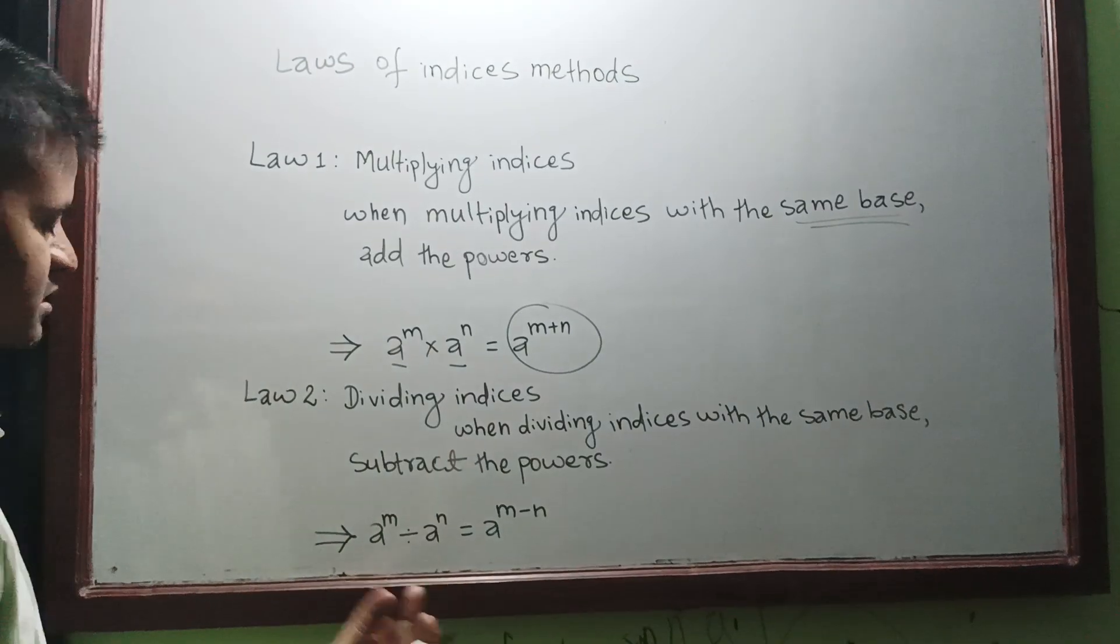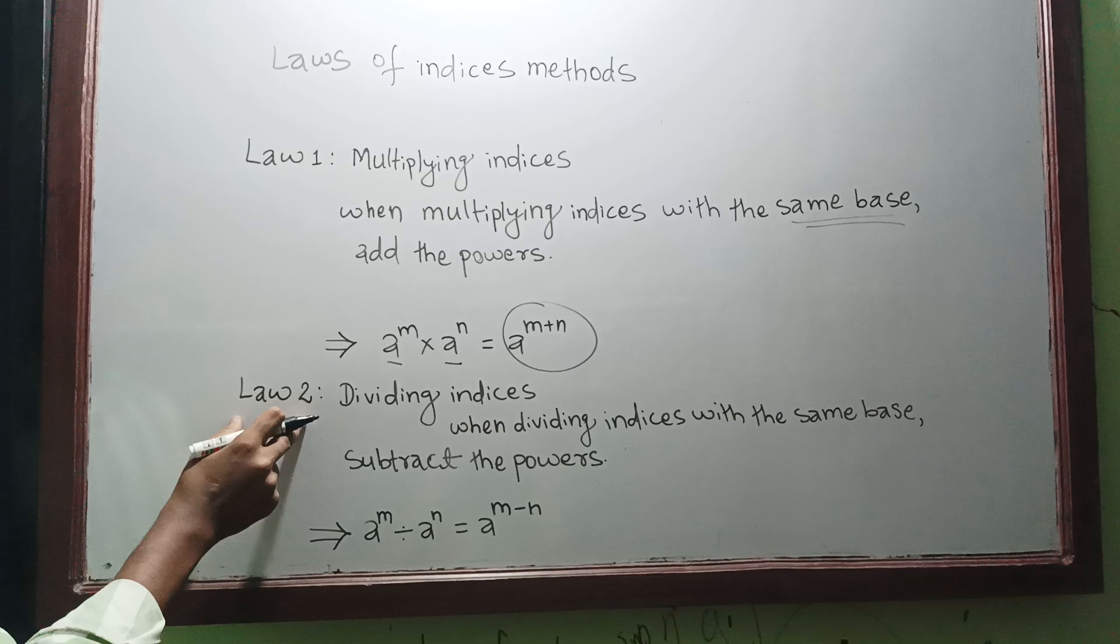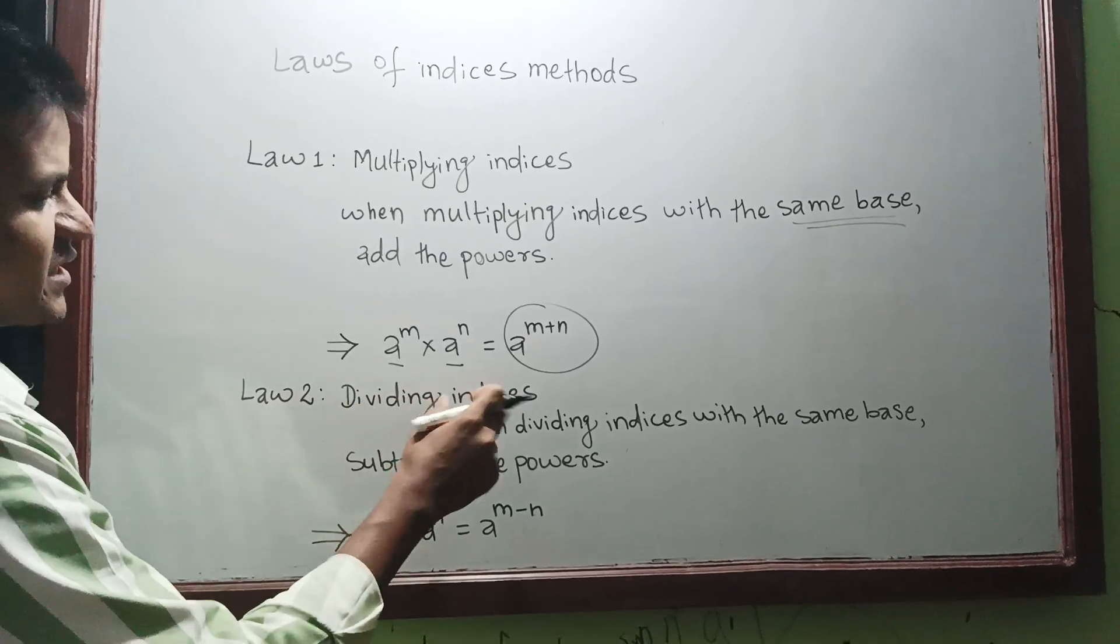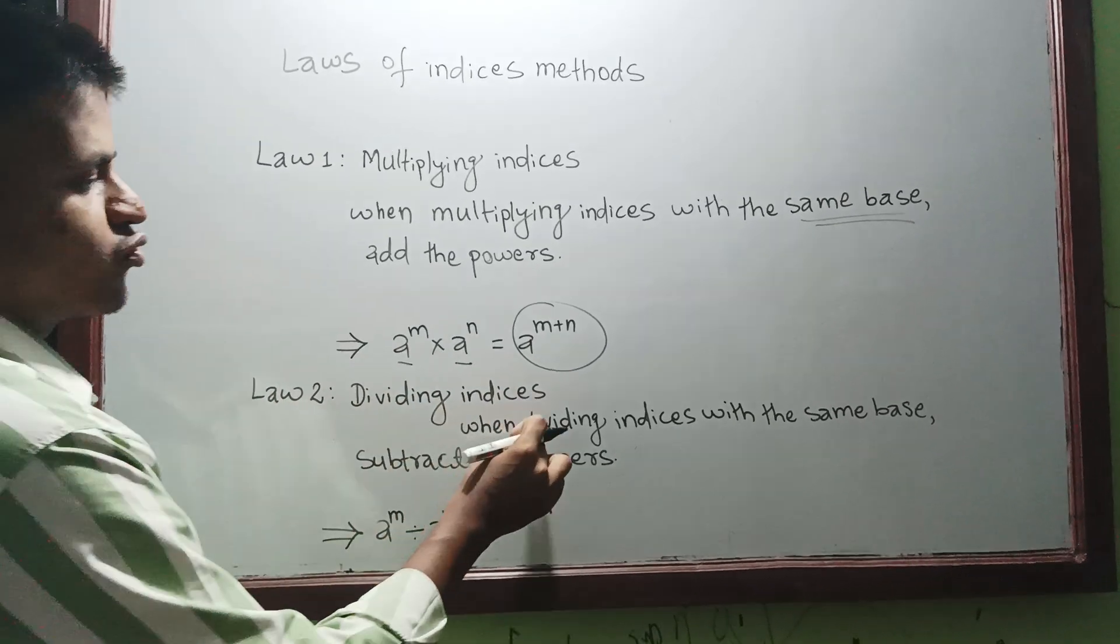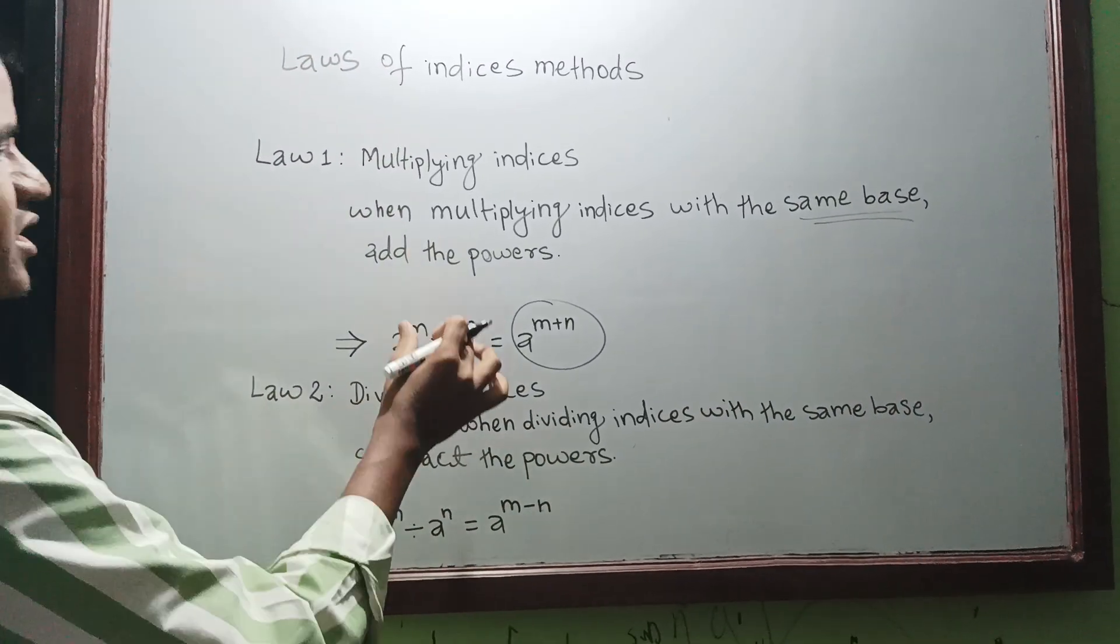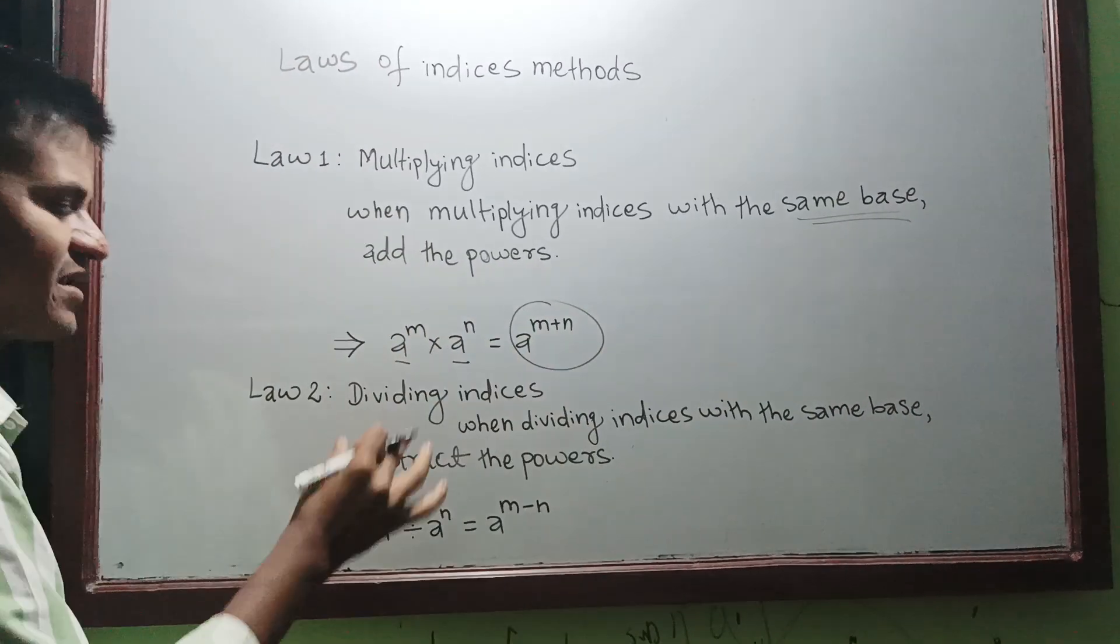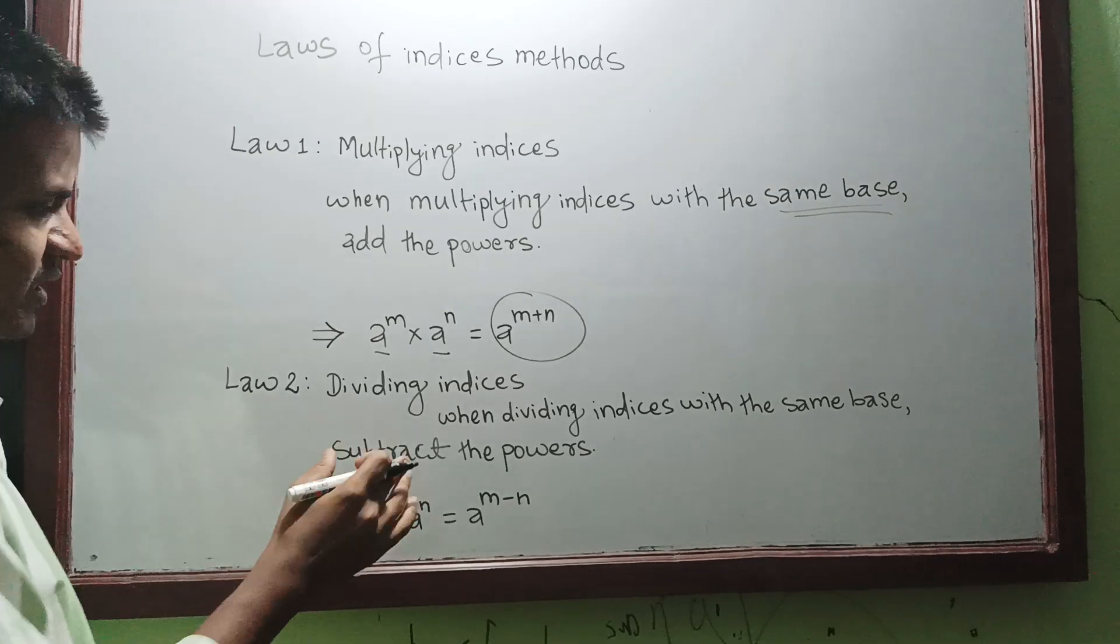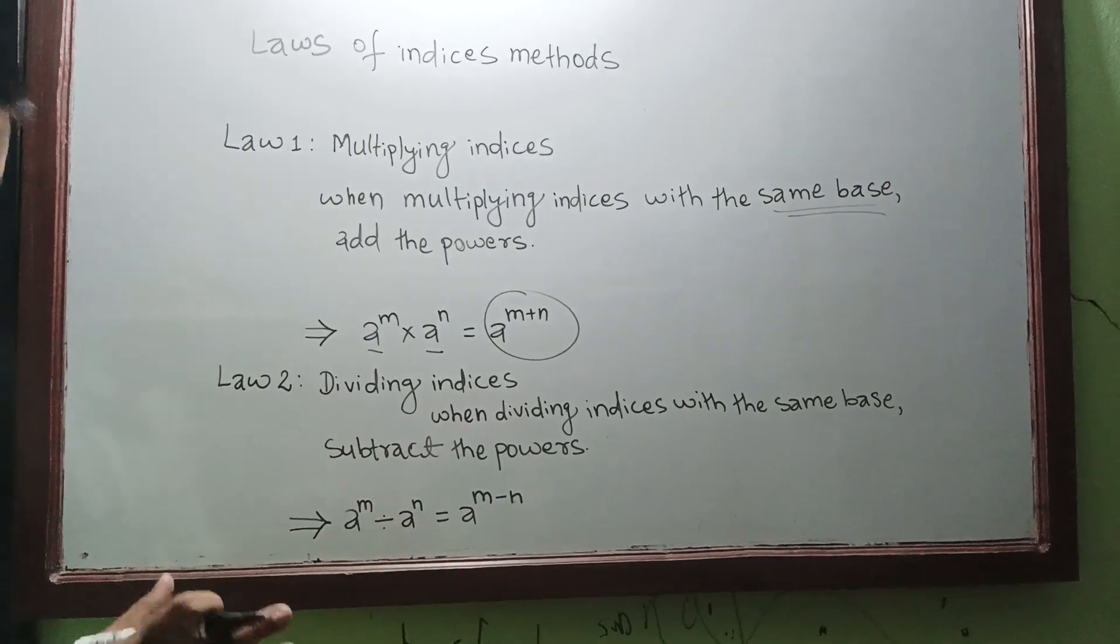Law 2: Dividing indices. When dividing indices with the same base, subtract the powers. So in multiplication it was addition, and in division it is simply subtract the powers, nothing else. Always remember, if bases are same, then only.